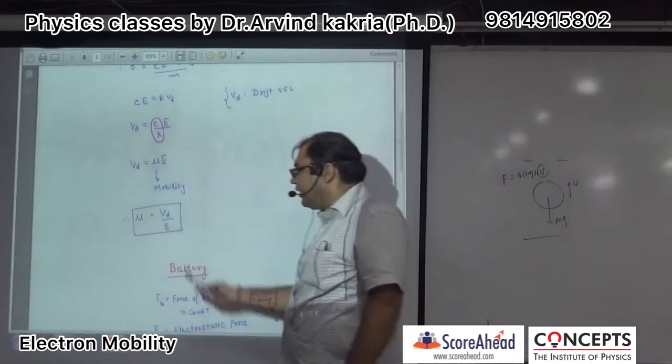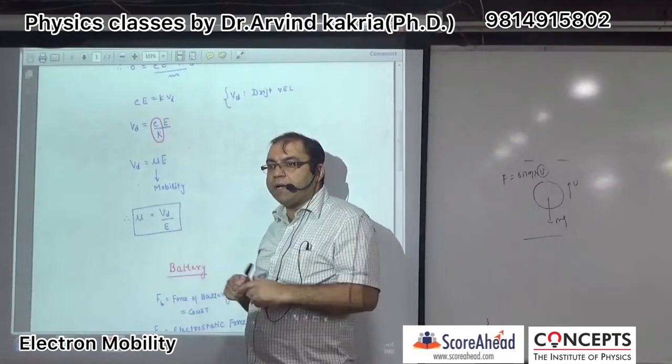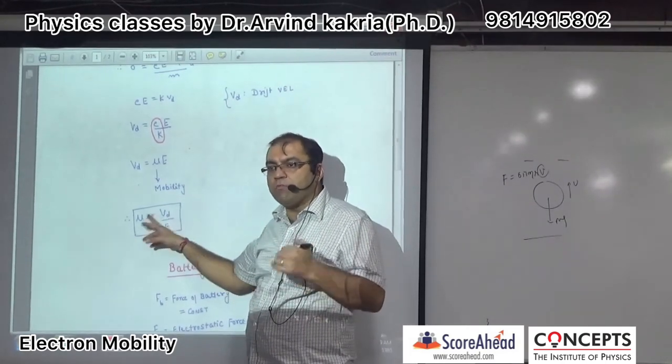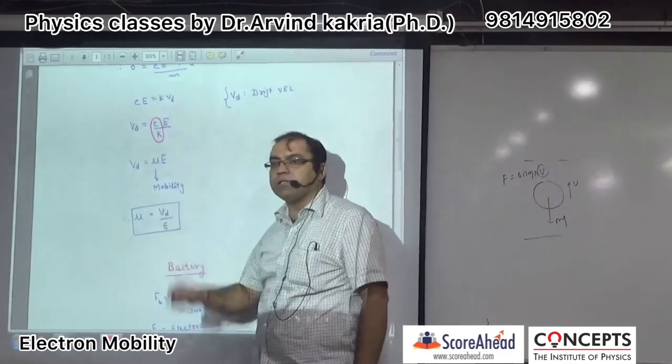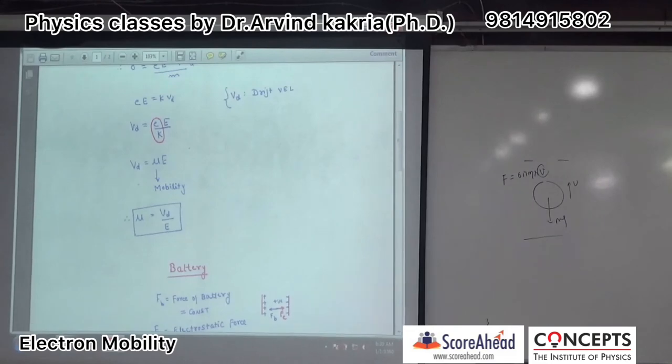Mobility is the ratio of drift velocity to applied electric field. For a constant electric field, higher mobility means faster drift velocity. You should remember this formula. The proof is not given in most books, but I have brought it to you, so you can note this formula.